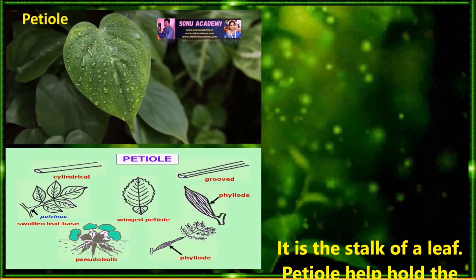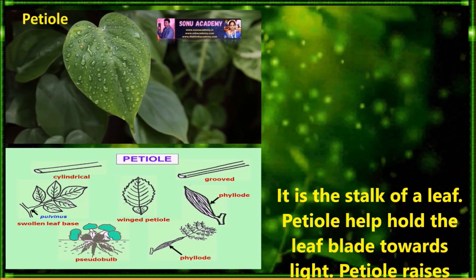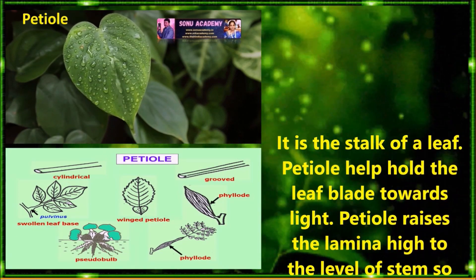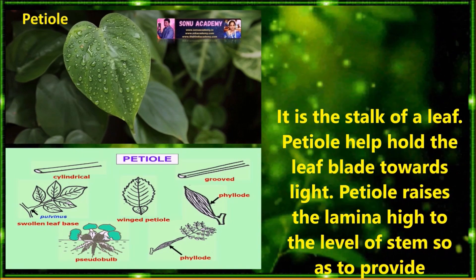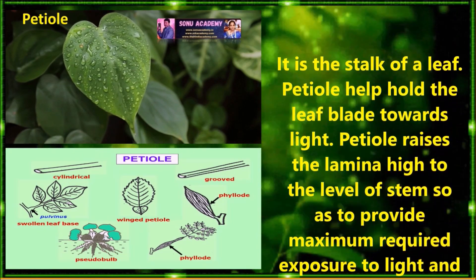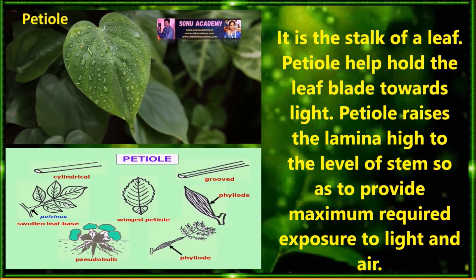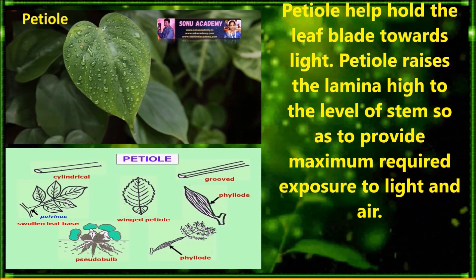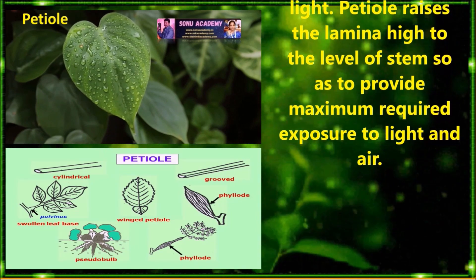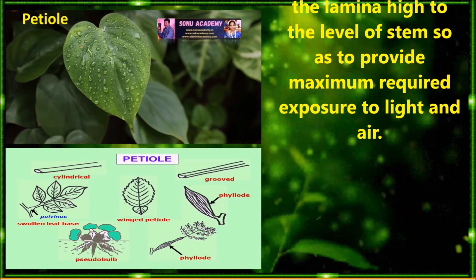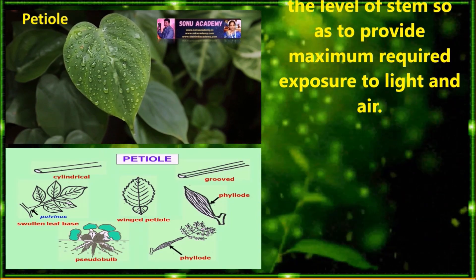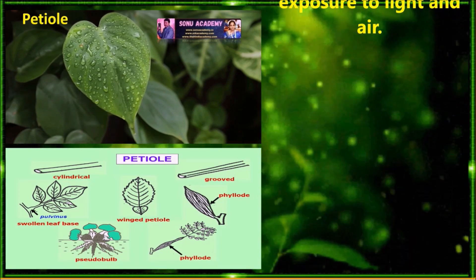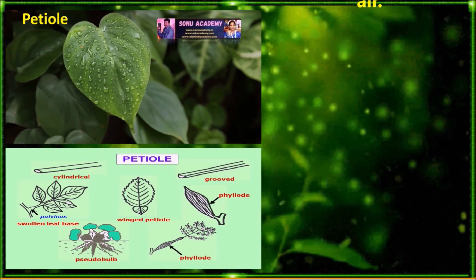Petiole is also called mesopodium. It is the stalk of the leaf. Petiole helps to hold the leaf blade towards light. Petiole raises the lamina high to the level of the stem so as to provide maximum required exposure to light and air.